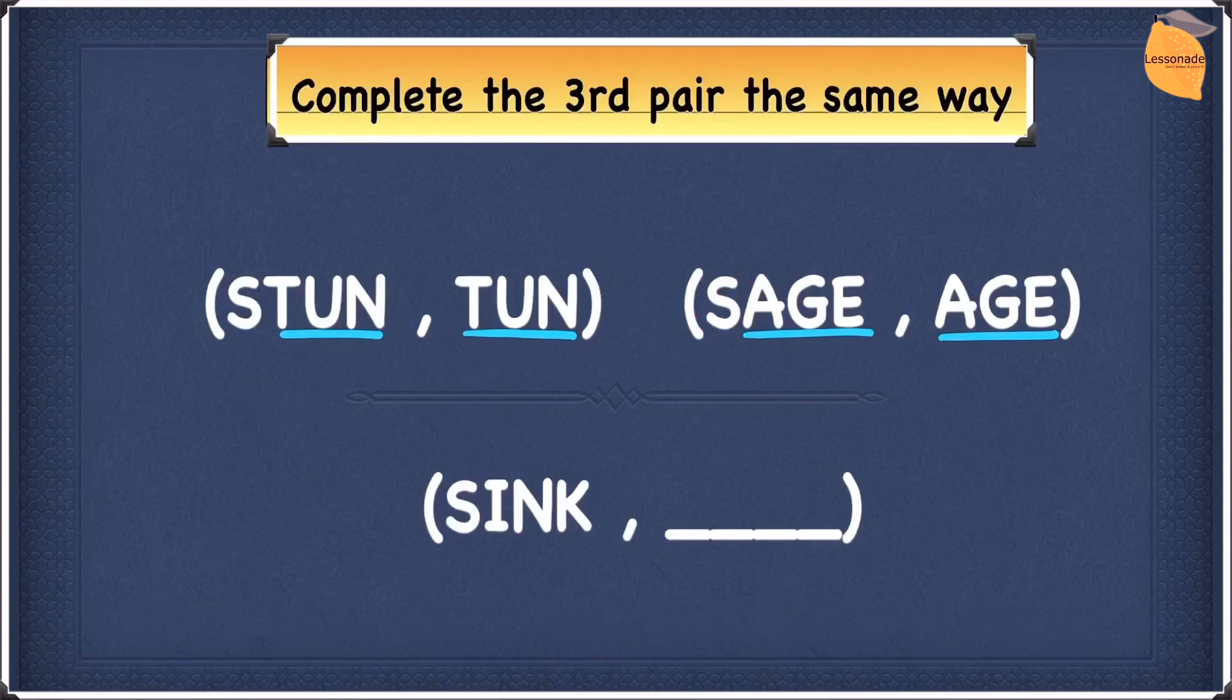So now let's apply this rule to the third pair to find our answer. Let's remove the first letter, which is S, and keep the last three, which is I, N and K. It's going to give you an answer of INK. So the answer for this example is INK.